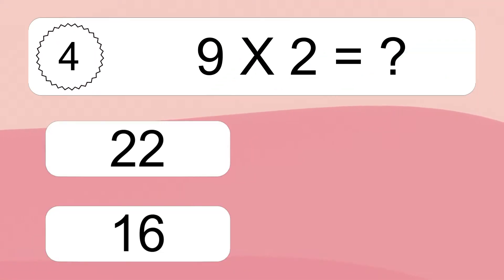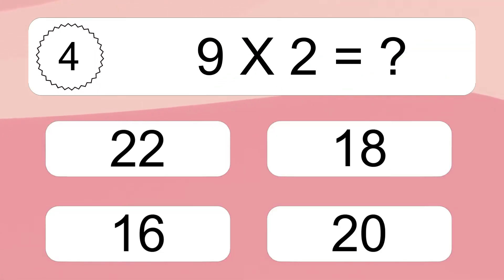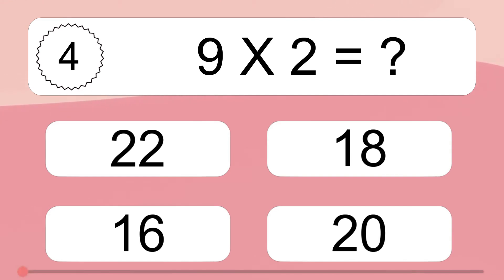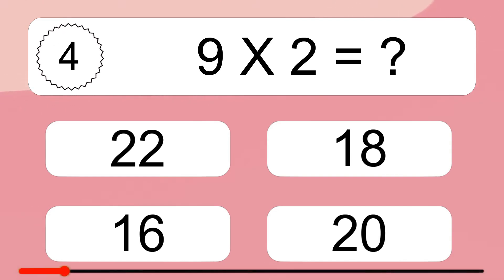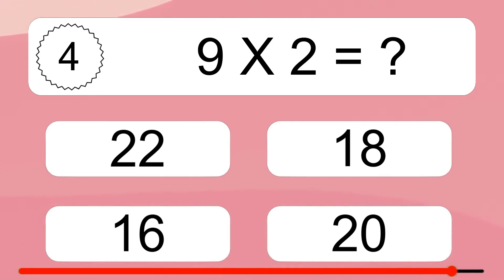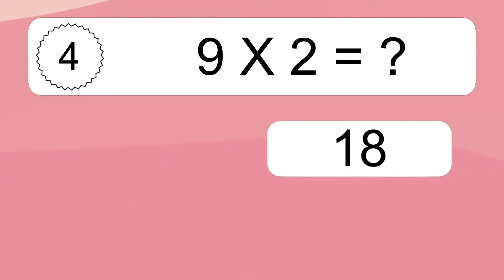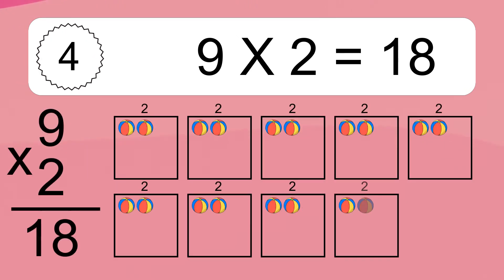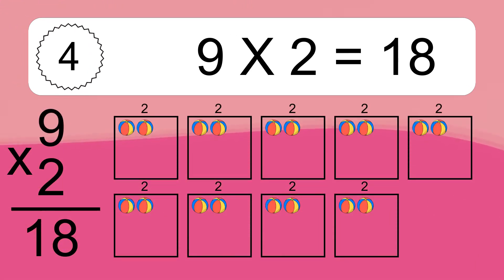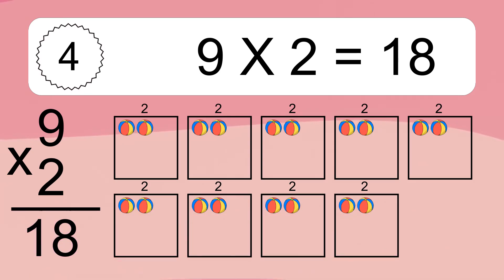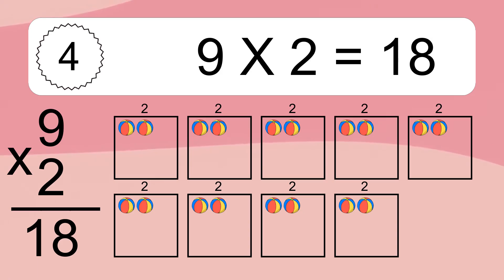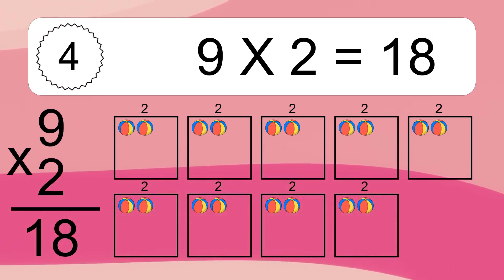9 times 2 equals what? 9 times 2 equals 18. We have 9 boxes, and each box has 2 colorful balls inside. If you count all the balls in all the boxes together, you will have 9 times 2 balls. This equals 18 balls.